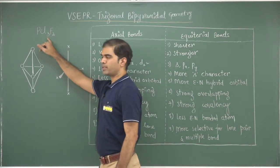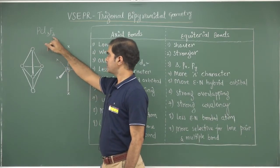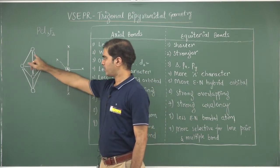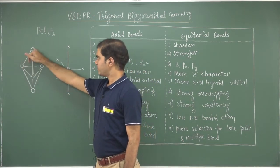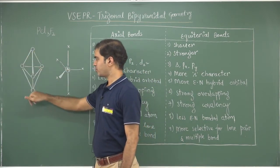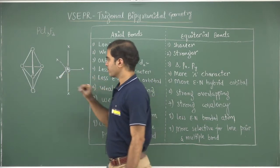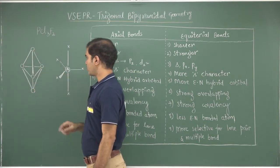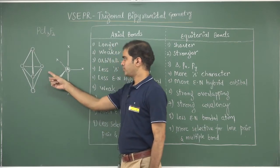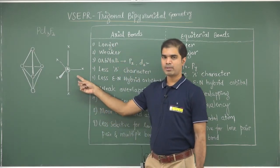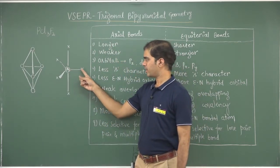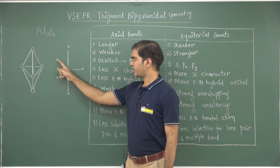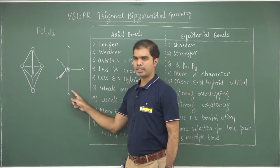First of all, PCl₃F₂ belongs to trigonal bipyramidal geometry. Here I have drawn the polyhedra — each circle is considered to be a vertex, and altogether there are 5 vertices or 5 coordinates. In a normal model, you can see the central atom and the surrounding atoms. These 3 are equatorial bonds and these 2 are axial bonds.